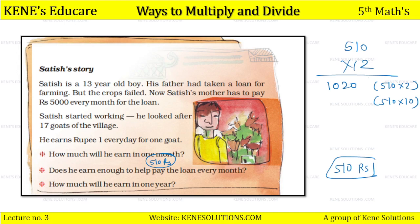Adding 1020 and 5100 together we get 6120. So the yearly income comes to 6120 rupees. Therefore, Satish will earn rupees 6120 in one year for looking after 17 goats.